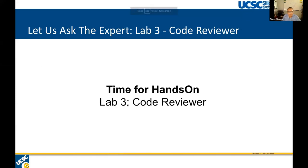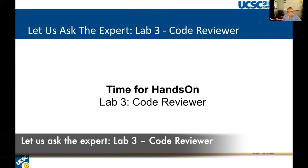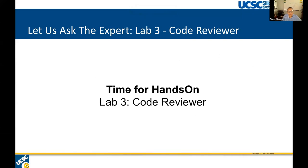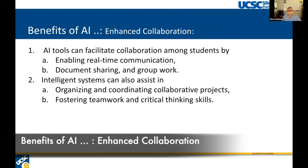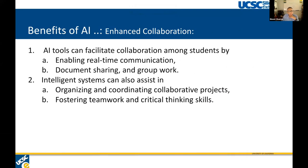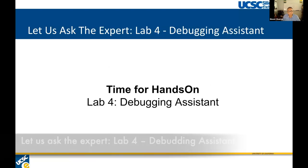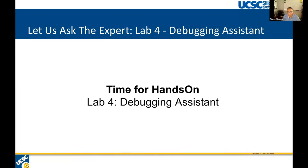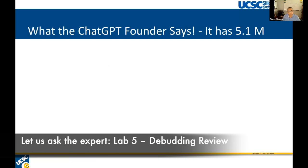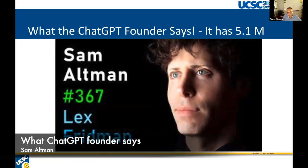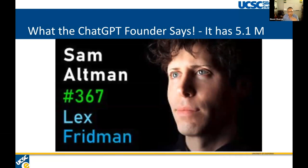I can also use AI as a code reviewer and for debugging — I'll show you that. Let me walk through the slides a bit faster. Collaboration tools like Notion are getting better and better with AI. Even GitHub now has OpenAI embedded, and you can use it as a debugging assistant. I'll show you the code review lab. I'll also give you a link to Sam Altman's podcast with Lex Fridman — it's very good. And if time permits, I'll talk about plagiarism and GPT Zero, created by a 22-year-old AI student who built a tool to detect if content was generated by OpenAI.